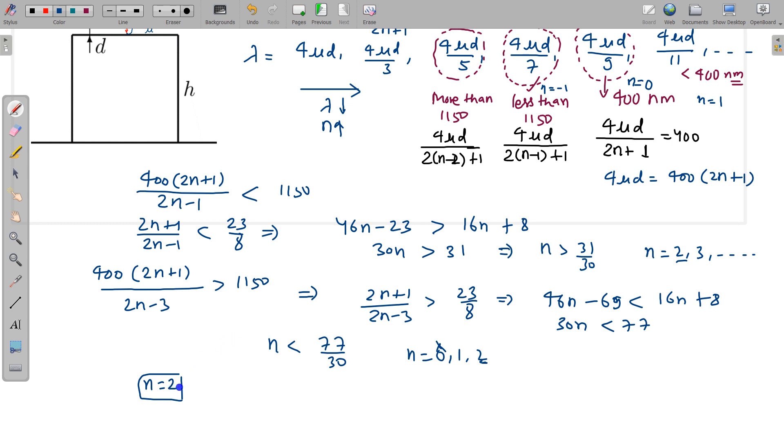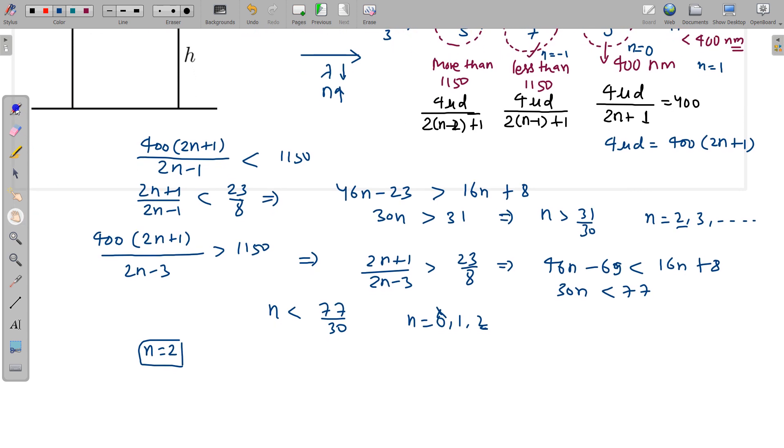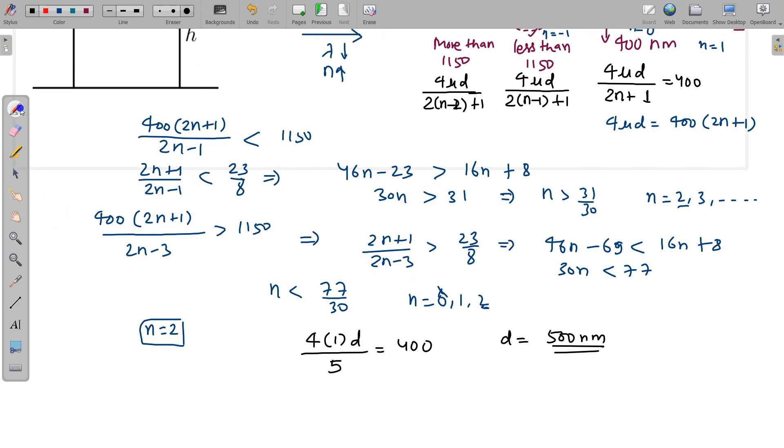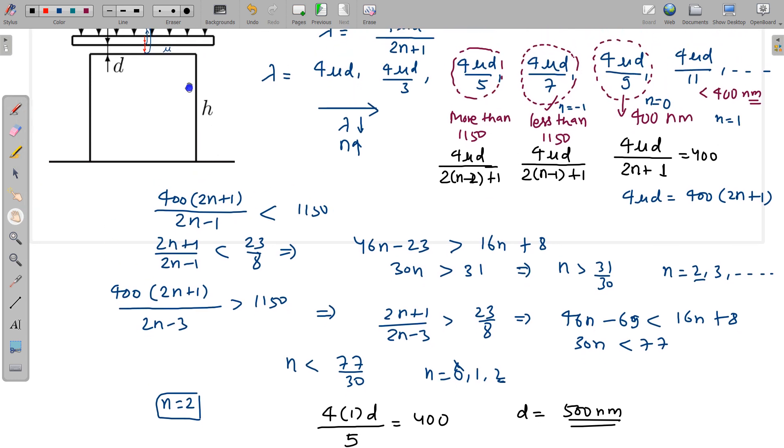So 400 = 4μd/(2n+1), where n = 2, so 2n+1 = 5. This is 400 nanometer. So we can find d easily: 4μd/5 = 400, where μ is one, so d = 500 nanometer. So d is 500 nanometer. This d is comparable to the lambda.